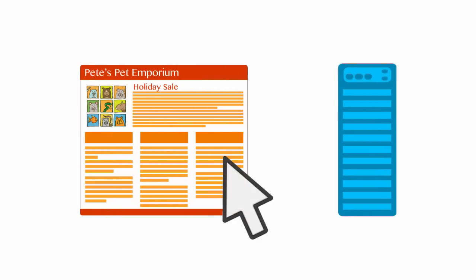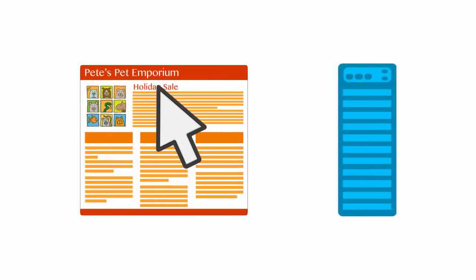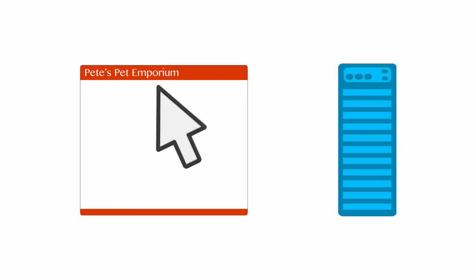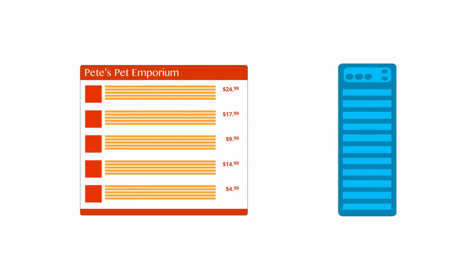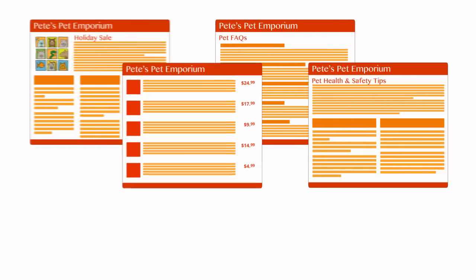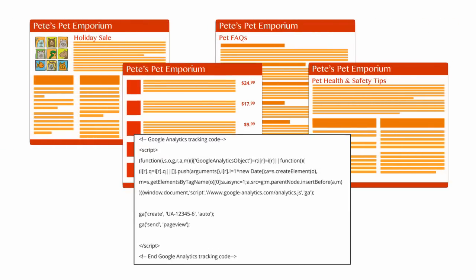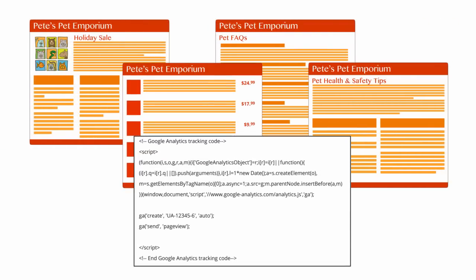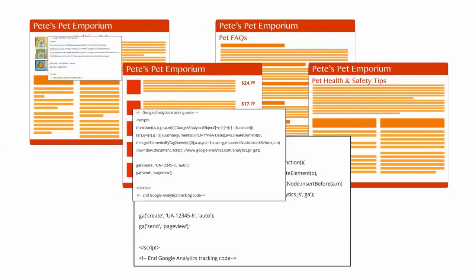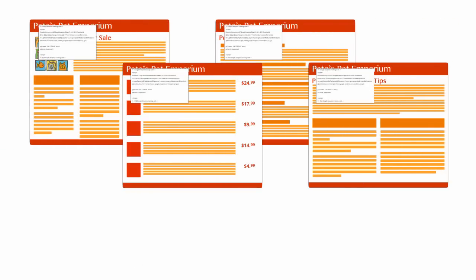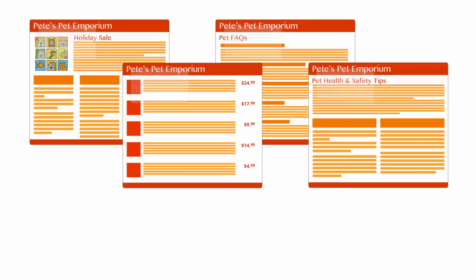This snippet generates a page view hit each time a page is loaded. It's essential that you place the Google Analytics tracking code on every page of your site. If you don't, you won't get a complete picture of all the interactions that happen within a given website session.